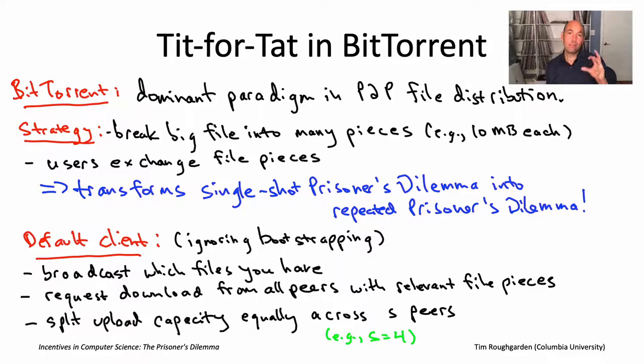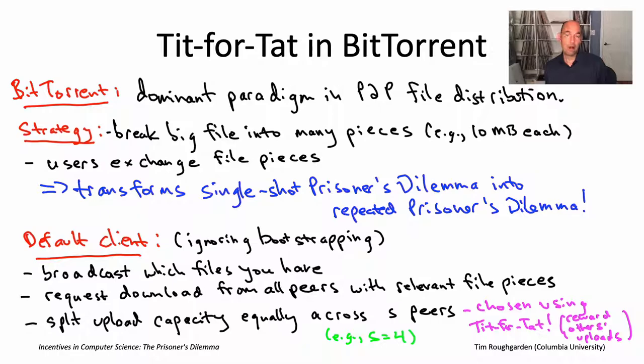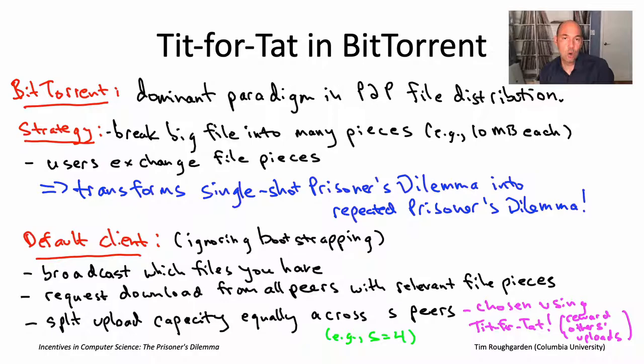This is where BitTorrent relies directly on the inspiration from tit-for-tat. You choose the four of those 20 peers who have been nicest to you in the recent past — who have uploaded the most, who have let you download the most amount of file pieces. That's how the repeated prisoner's dilemma and specifically the tit-for-tat strategy show up in peer-to-peer file distribution, specifically in BitTorrent.